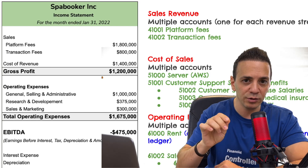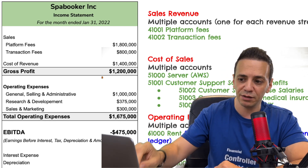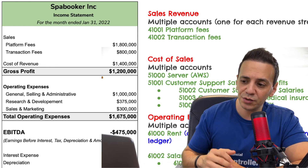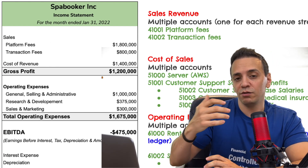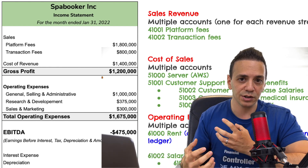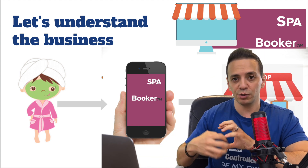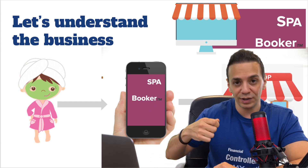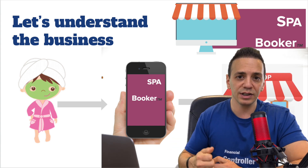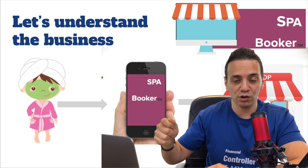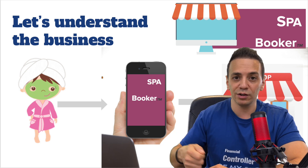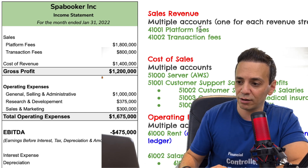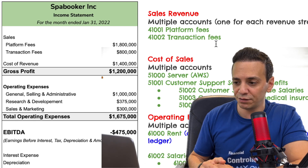Now let's look at the income statement for Spa Booker for the month ended January 31, 2022. For sales revenue, create multiple accounts — one for each revenue stream. Spa Booker earns a transaction fee (roughly 10–20% of each booking) and a platform fee (a fixed monthly amount, perhaps $200–$300, charged to each spa just for being on the platform). So you create two accounts in the chart of accounts: one for platform fees and one for transaction fees, to track each revenue stream separately.